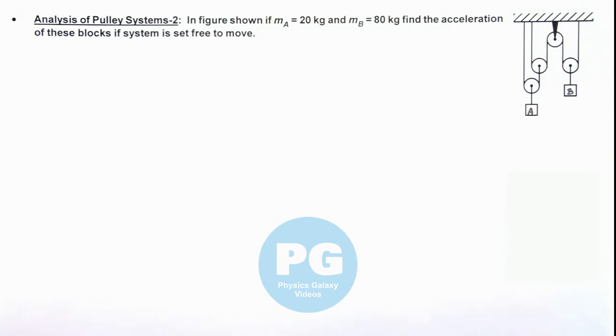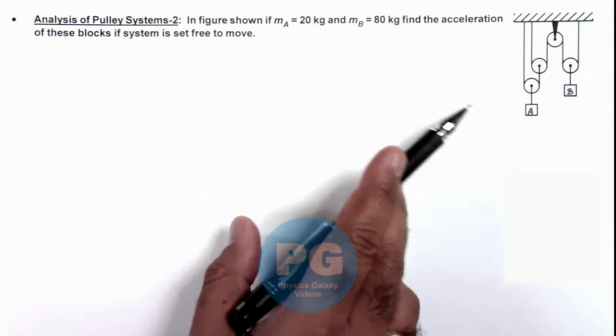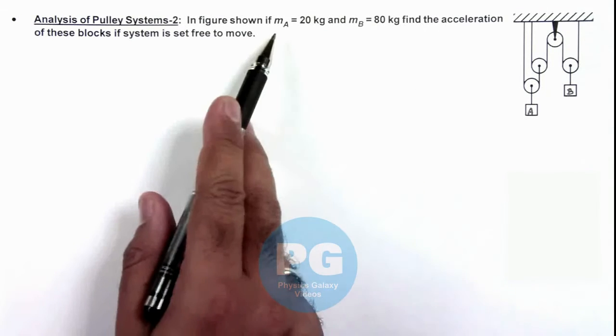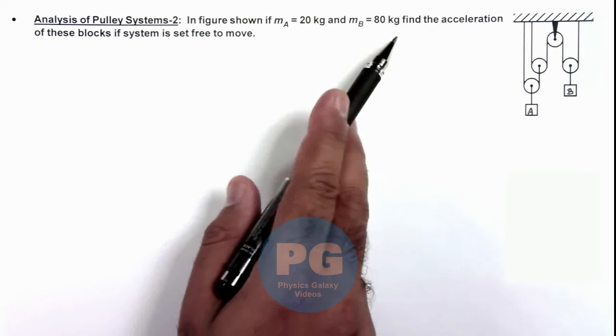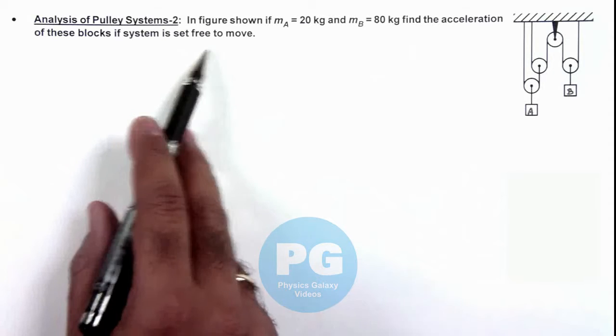In this illustration we'll discuss another pulley system. Here you can see there are 2 blocks hanging from a pulley system which are of mass 20 kg and 80 kg. We are required to find the acceleration of the blocks if system is free to move.